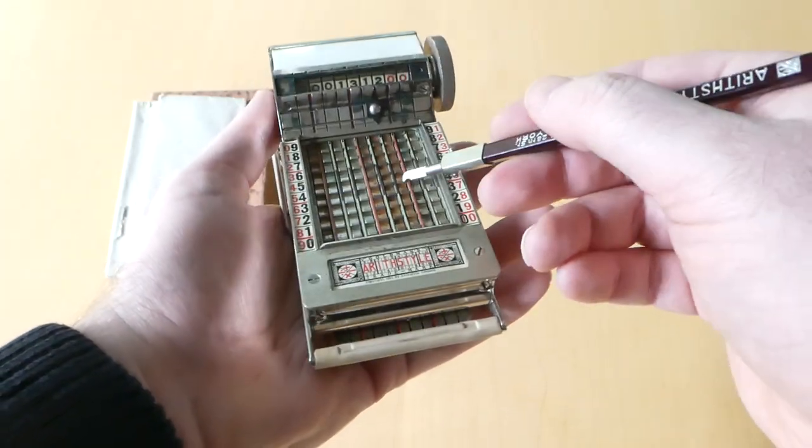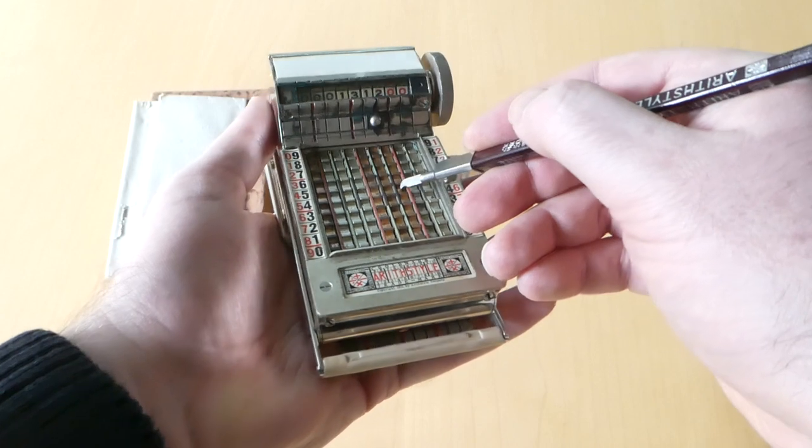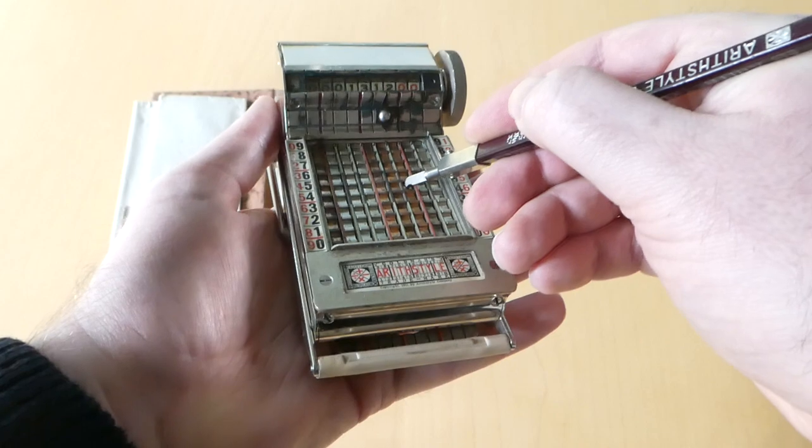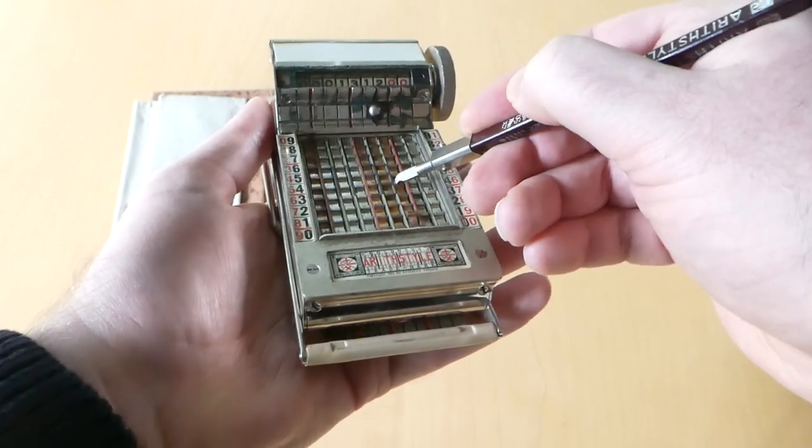When you put the stylus in, you have to really push down the column because that unlocks the mechanism. If you don't do that, the chain just won't move.